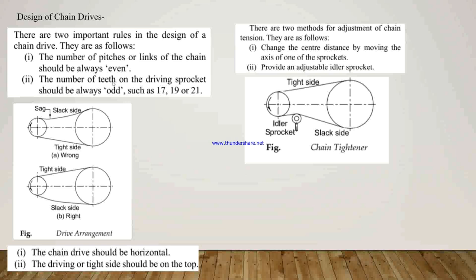There are two methods for the adjustment of chain tension. Method 1: change the center distance by moving the axis of one of the sprockets. Here, the center distance between the two sprockets is periodically increased by means of an adjusting screw. The electric motor carrying the driving sprocket moves with respect to the bed plate via the adjusting screw. This device can compensate for chain elongation up to the length of two links, after which two links are removed and the chain is reassembled and reused.